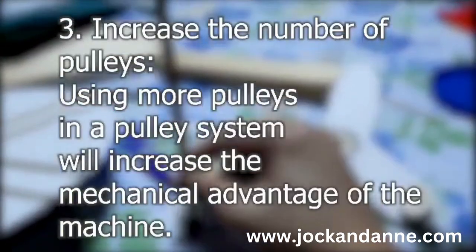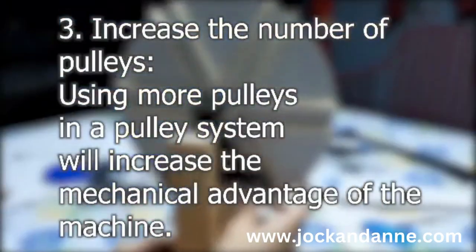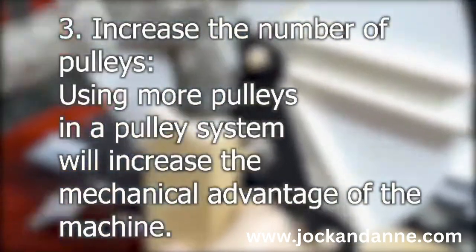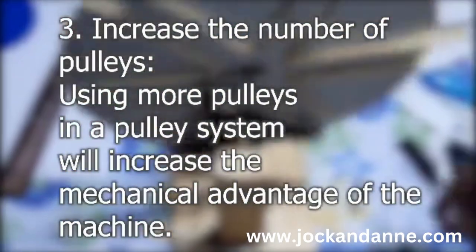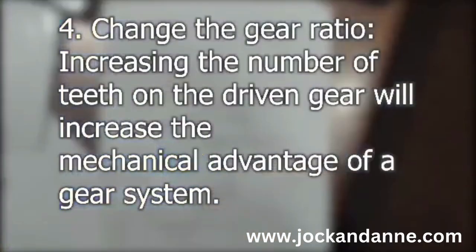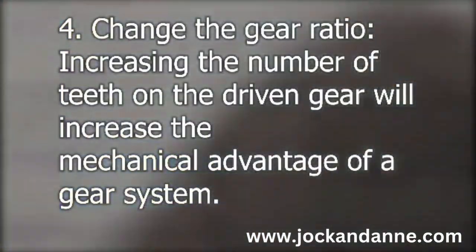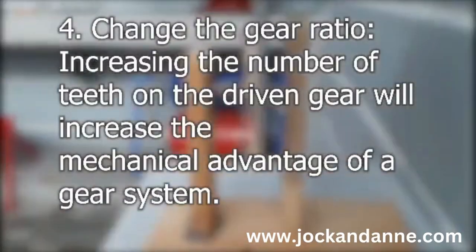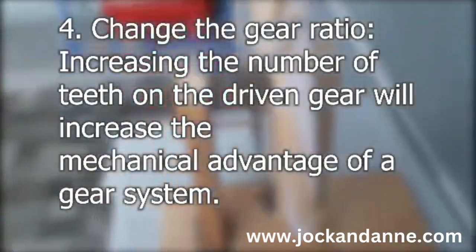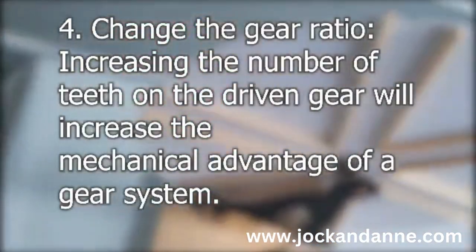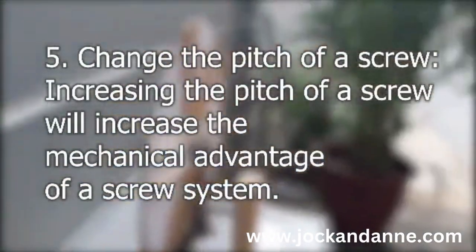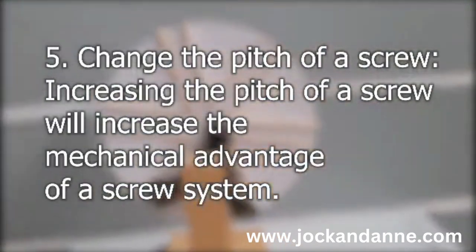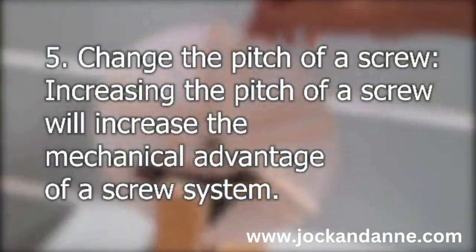Number 3: Increase the number of pulleys — using more pulleys in a pulley system will increase the mechanical advantage of the machine. Number 4: Change the gear ratio — increasing the number of teeth on a driven gear will increase the mechanical advantage of the gear system. Number 5: Change the pitch of the screw — increasing the pitch of the screw will increase the mechanical advantage of the screw system.